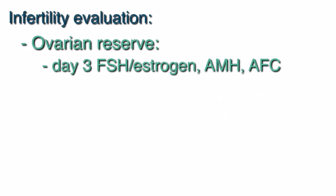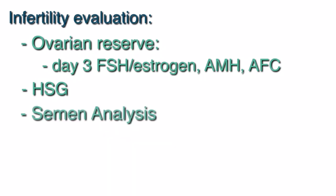We'll check the structure of the uterine cavity and tubal patency with an HSG, or hysterosalpingogram, and we'll check a semen analysis.